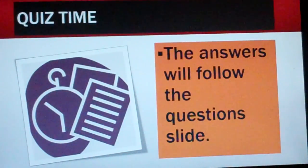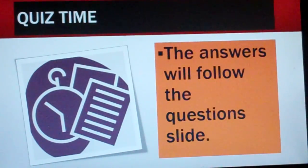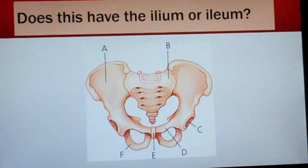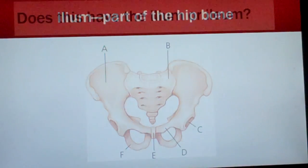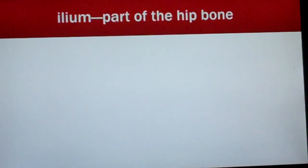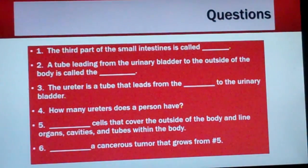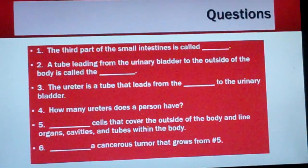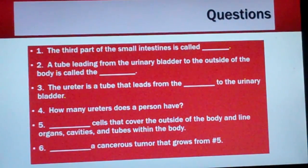Quiz time. The answers will follow the question slide. Does this image show the ilium or ilium? Answer: Ilium, spelled I-L-I-U-M, is part of the hip bone. The third part of the small intestine is called blank. Number two: a tube leading from the urinary bladder to the outside of the body is called the blank.